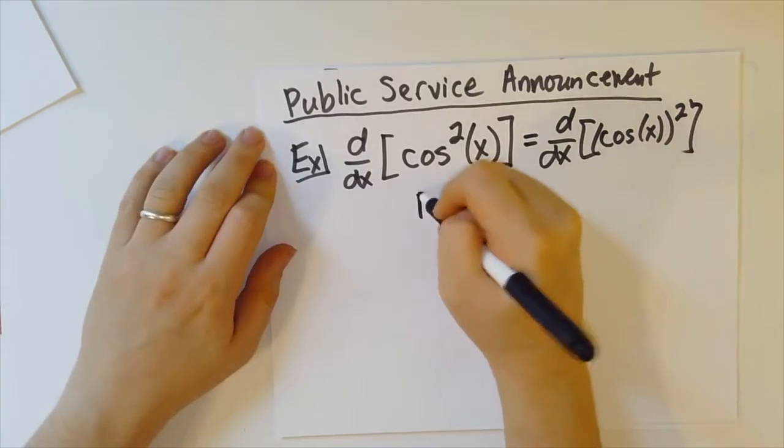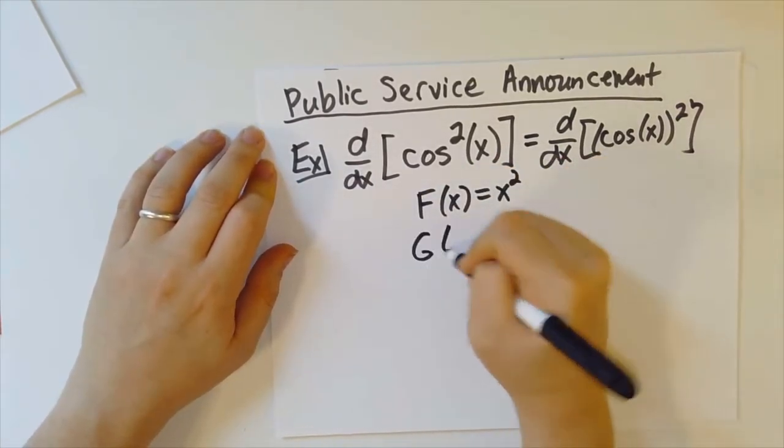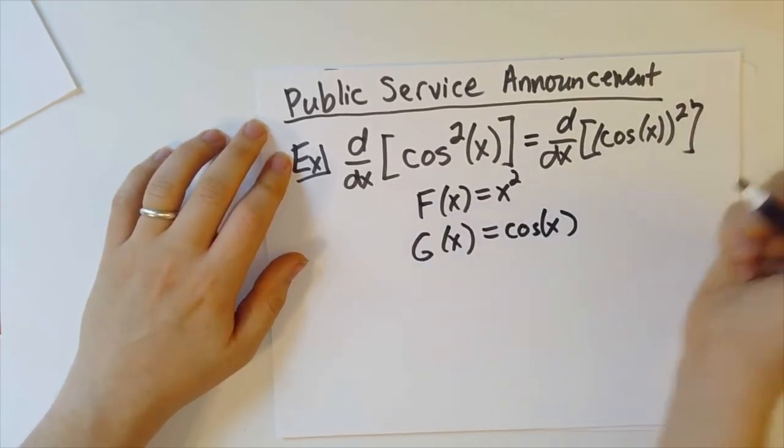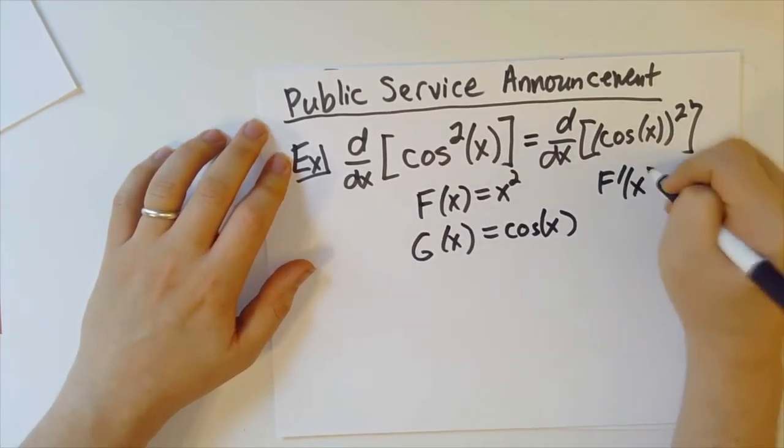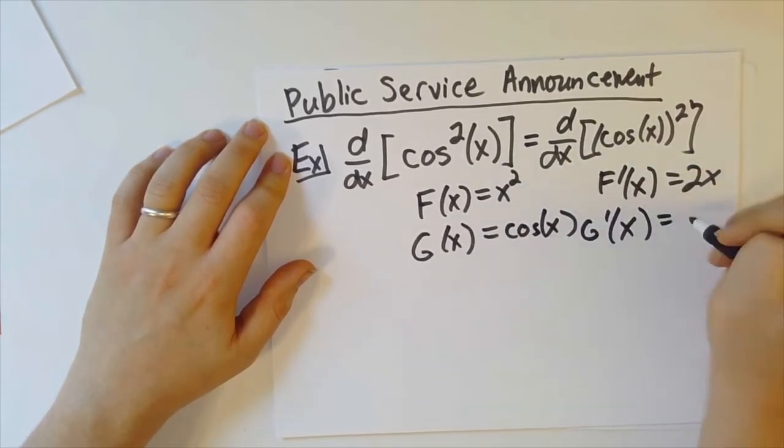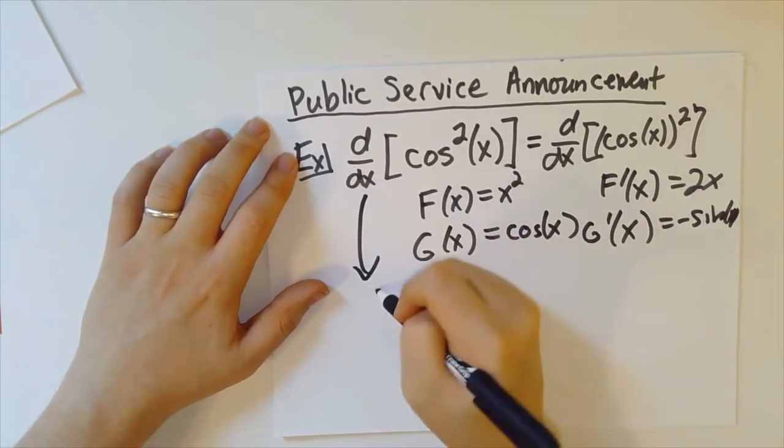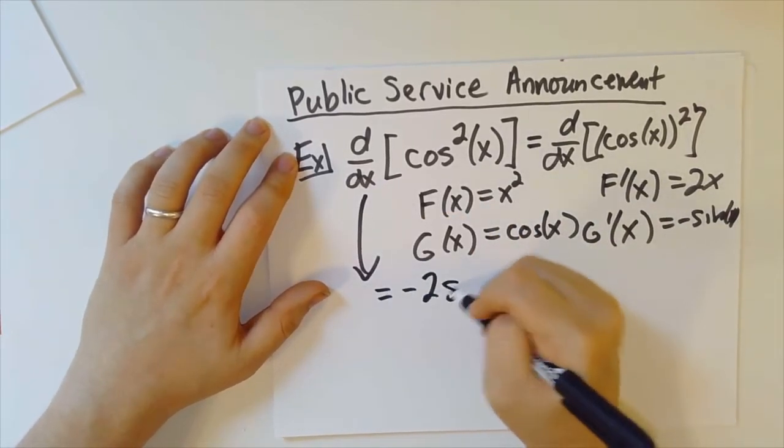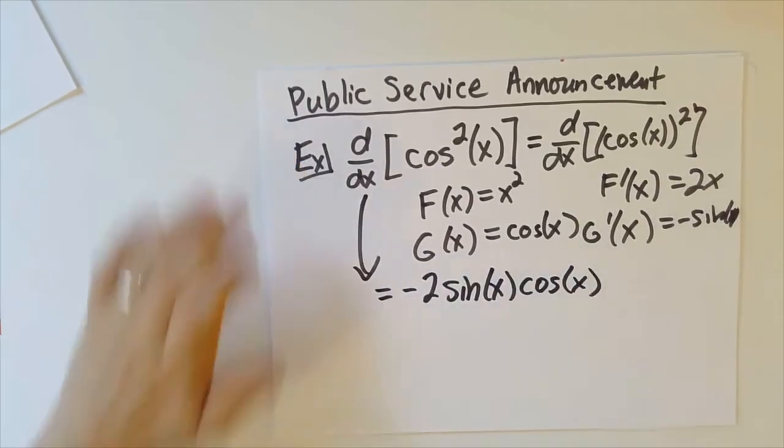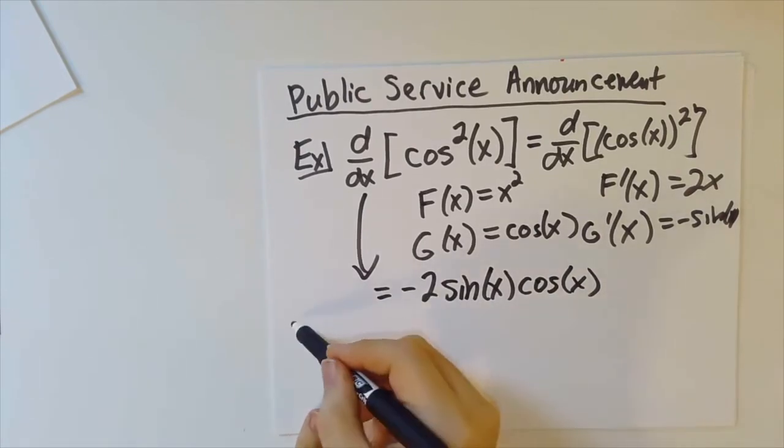That is a chain rule question where f of x is x squared, g of x is cosine of x, so f prime of x is 2x, g prime of x is minus sine of x. We get that this derivative is minus 2 sine of x cosine of x. That's all well and good—I'm not saying anything is wrong with that, that's perfectly correct.